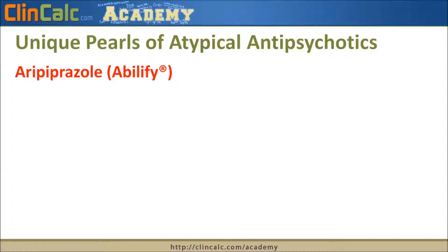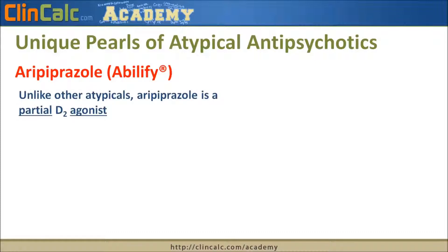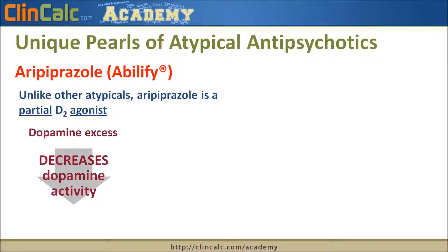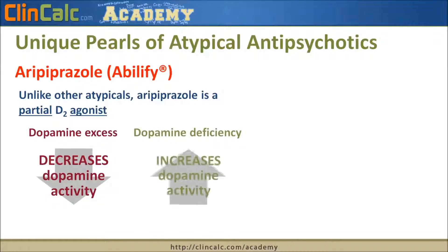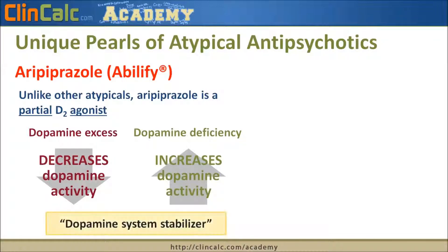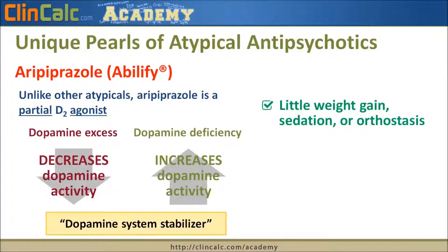The last atypical antipsychotic is aripiprazole or Abilify. It is unique because it is a partial D2 agonist, whereas the other atypicals are D2 antagonists. If a patient has too much dopamine, this partial agonist sits on the dopamine receptor and reduces stimulation. If the patient has too little dopamine, it acts as a dopamine agonist and increases activity. The manufacturer calls this a 'dopamine system stabilizer.' Like ziprasidone, we see very little weight gain, very little sedation, and very little orthostasis with aripiprazole.